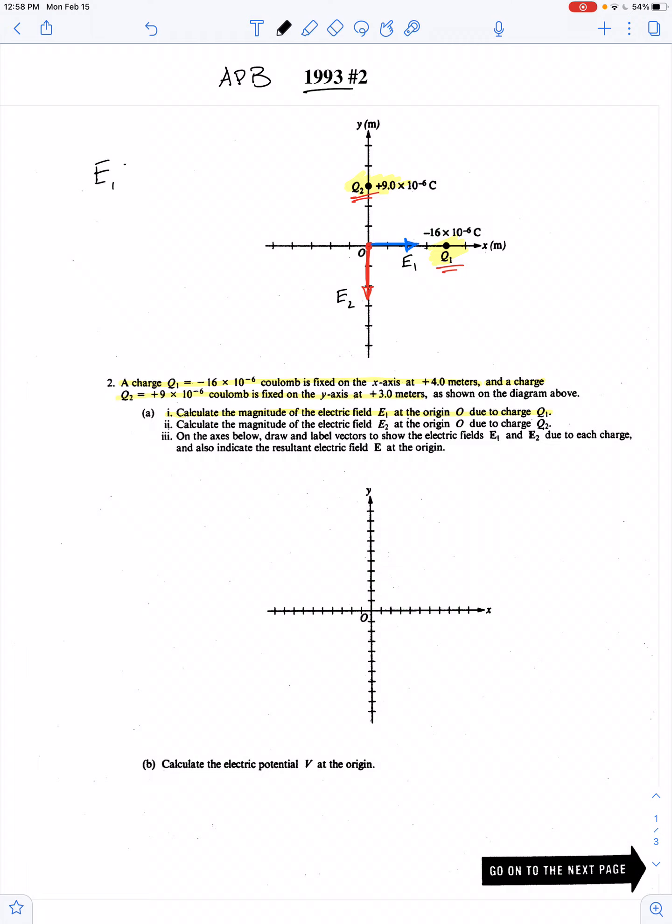E1 is just equal to KQ1 divided by x squared. And likewise, E2 in magnitude is KQ2 divided by y squared. So this is 9 times 10 to the 9th times 16 times 10 to the negative 6th divided by 4 squared. That's nice. 4 squared gives us 16, so that cancels out.